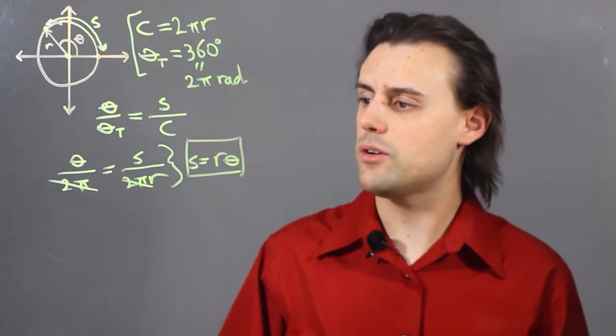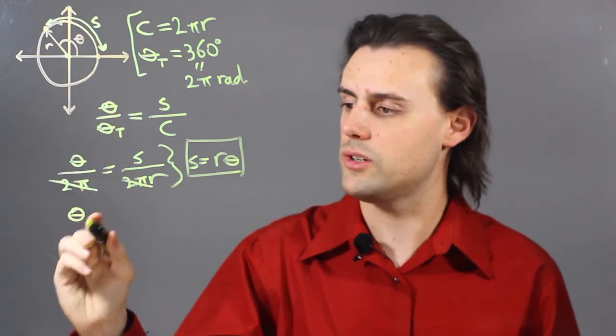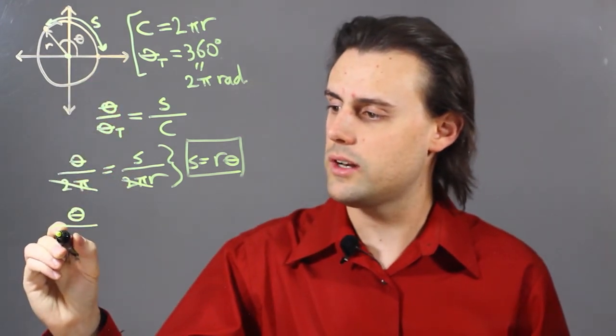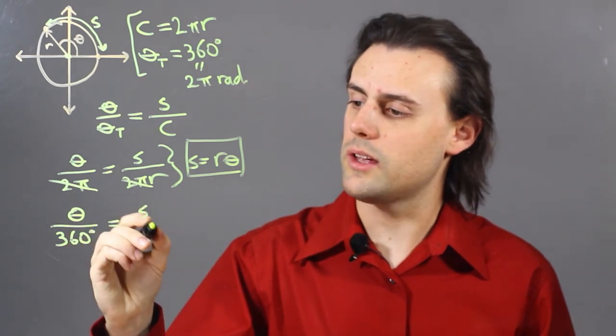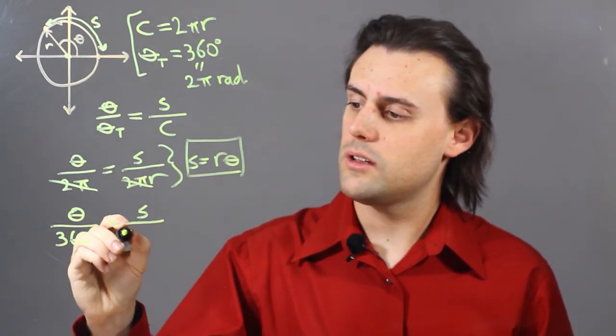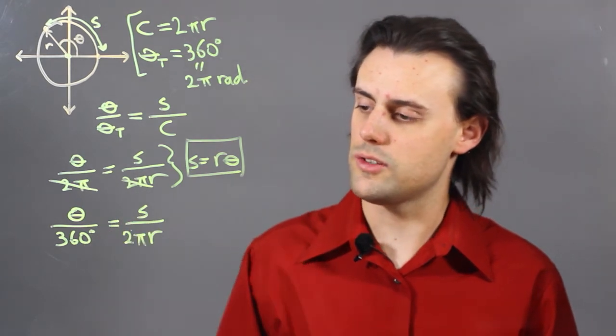Alternatively, I could have considered degrees, where I would have my angle measured in degrees, divided by 360, and then my arc length here would be divided by the circumference, which is 2πr.